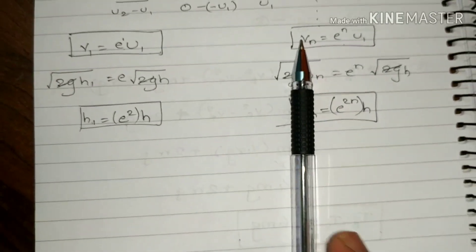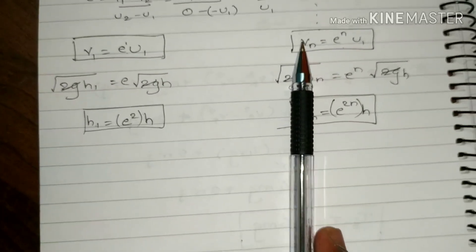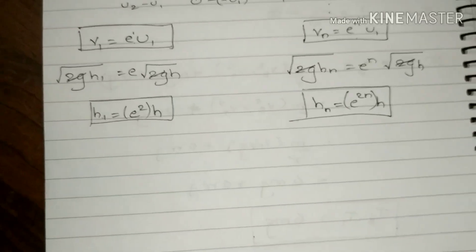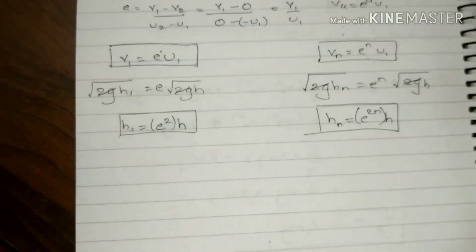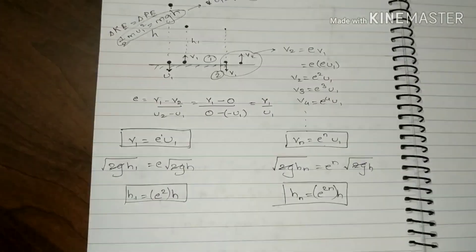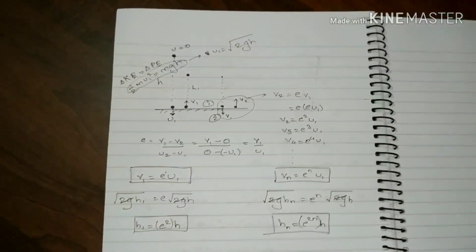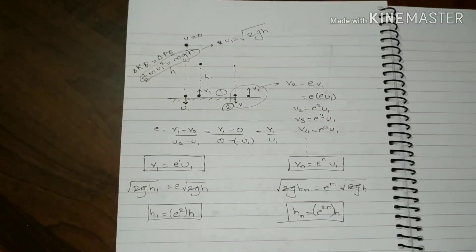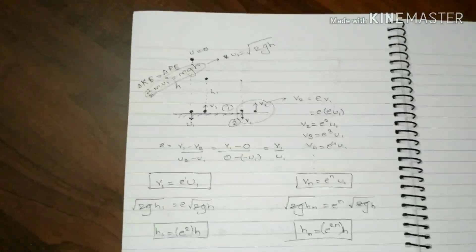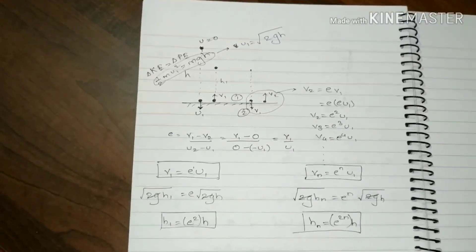From here you can understand that the velocity never becomes 0 in ideal conditions — it is not supposed to be 0. But in practical cases it becomes 0 after a certain point because of air resistance and other factors present in real scenarios. I hope this lecture was very fruitful for you. In this lecture I have explained the relation of velocity and height after any number of bounces. Thanks a lot. See you next time. Bye-bye.